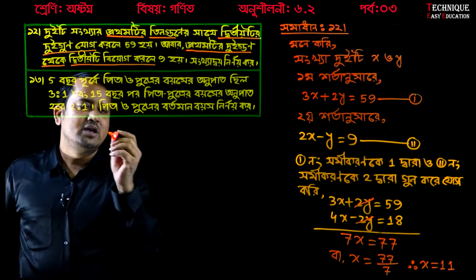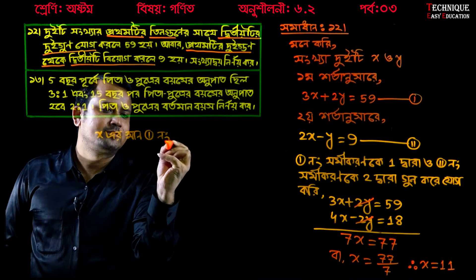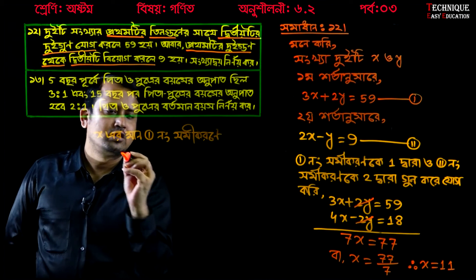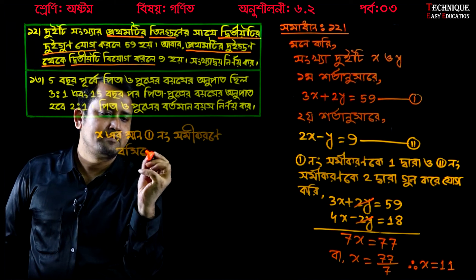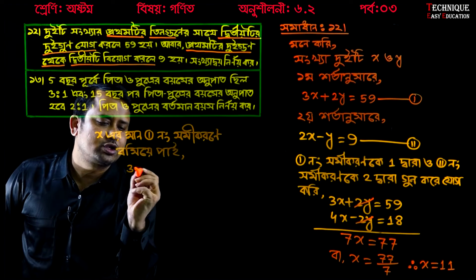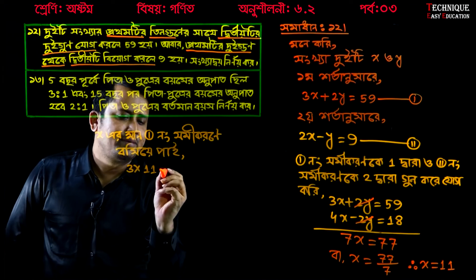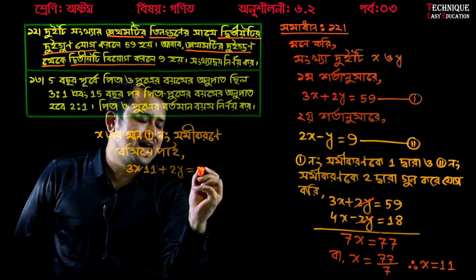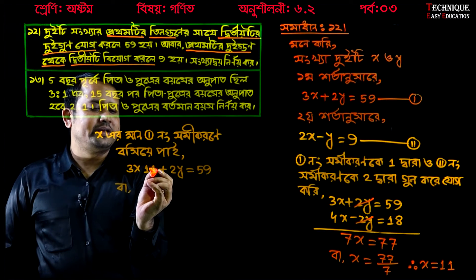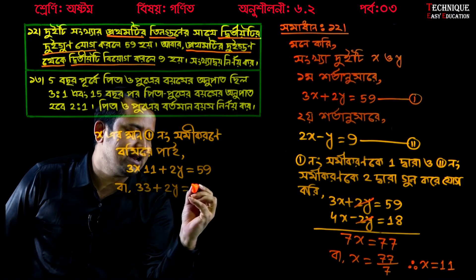We write x equals 11. So x equals 11, and x-ray is 5-10, so x equals 11. Then 2 times 10 is 5 times, x equals 5. Plus 2y equals 59. So 11 times 3 equals 33. Plus 2y equals 59.